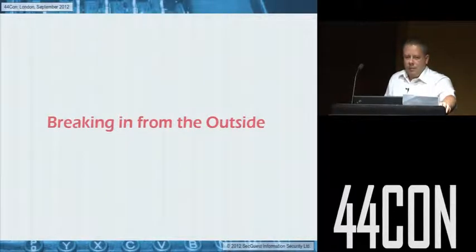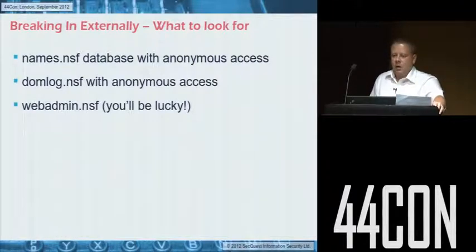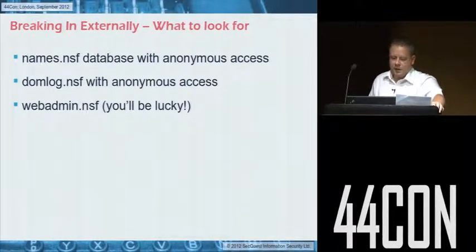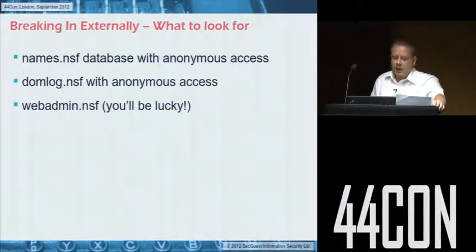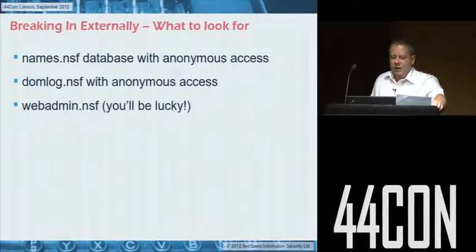Breaking in from the outside — what you can see from the Internet. Notes ships with about 18 or 19 databases by default. Log.nsf is useful if you can get access, but names.nsf is probably the most important because it will give you usernames and passwords. Names.nsf is the main directory for Domino, giving details of users, server configuration, and paths to other servers. Domlog.nsf stores information about Internet users. And web admin.nsf — if you get that, it's practically game over for the server.